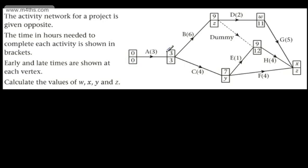Looking at this network, we can see that activity A relies on nothing — it's dependent on nothing. Therefore we can start from the source node at the beginning, with the sink node at the end. Activity A takes three hours, which tells me the earliest time we can start B and C is going to be three hours. So this is the early event time for that node.